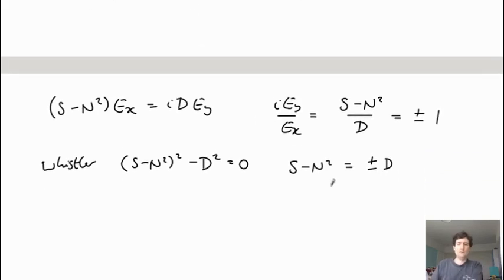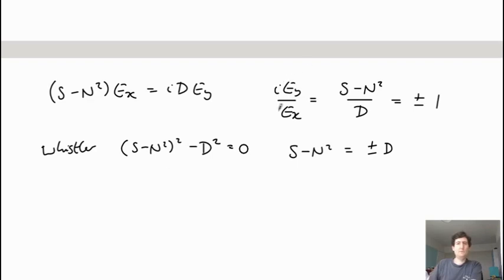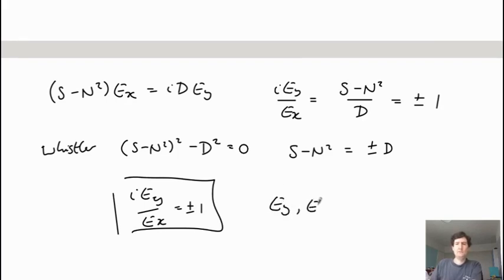And so for whistler wave, this i E_y over E_x is plus or minus one. And what this means is that E_y and E_x are 90 degrees out of phase.